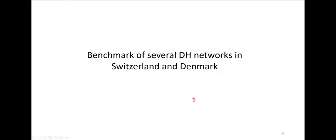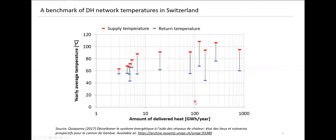Looking at the situation in Switzerland, here is a benchmark of 12 district heating networks, showing in red the average supply temperature and in blue the return temperatures. The x-axis represents the amount of annual heat delivered — large networks on the left, small ones on the right. We see temperatures ranging from about 65 up to 110 degrees, and nearly all return temperatures are higher than 50 degrees. There's no clear relation between network size and temperature levels.